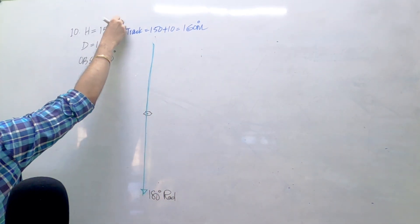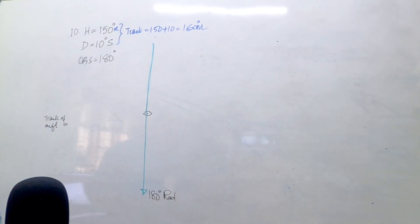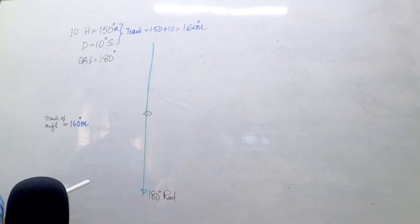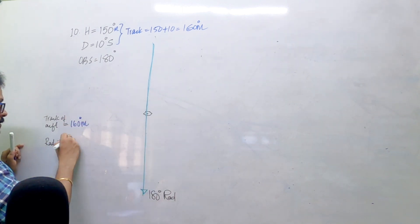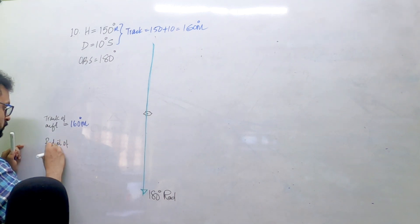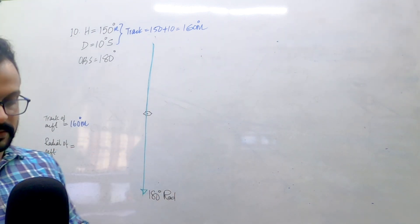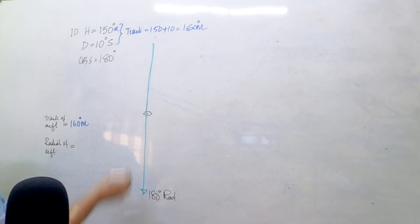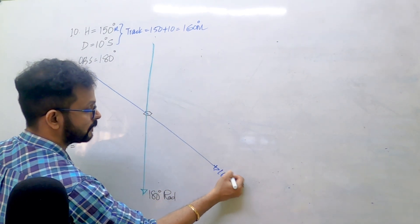The heading is also magnetic here. If the track of the aircraft is 160 degrees magnetic, what is the radial of the aircraft? Let's draw the track of 160 degrees passing through the VOR. This is a track of 160 degrees magnetic.